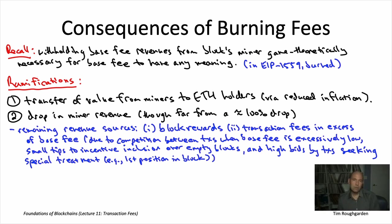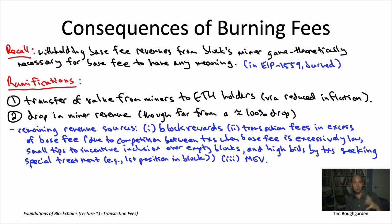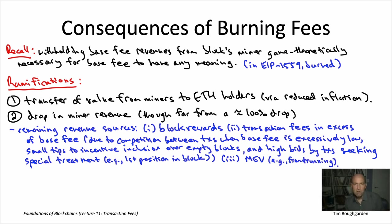Finally, there's miner extractable value, or MEV — something we'll talk about at length toward the end of the lecture series. In MEV, the miner inspects the contents of transactions it's thinking about including in its block, above and beyond just looking at the bid of each transaction. There are certain types of transactions, especially in decentralized finance and DeFi — for example, trading on an automated market maker — where the miner can benefit by putting some of its own transactions in the block alongside others, such as front-running a trade. In practice, MEV is quite significant: miners make quite a bit of revenue due to MEV.